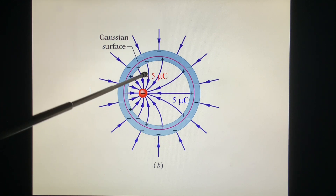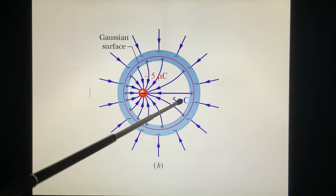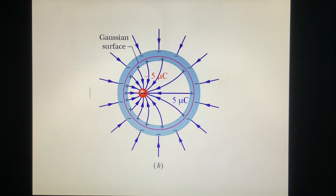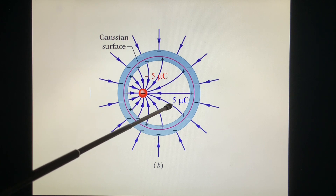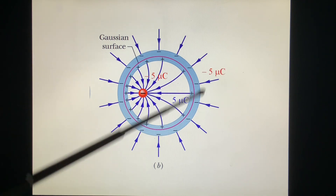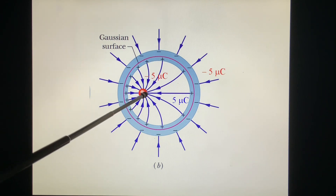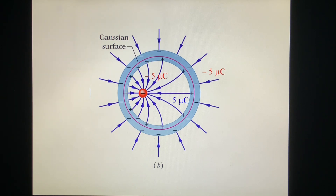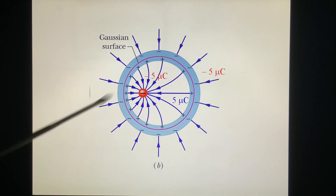Since we have a charge of minus 5 microcoulombs inside, there must be a positive 5 microcoulombs induced on the inner surface to make the net charge zero. The shell itself is originally neutral, so with positive 5 microcoulombs on the inner surface, another minus 5 microcoulombs spreads on the outer surface. The inner surface charge is not uniform, but the outer surface charge is uniformly distributed because the outer charge is screened from what happens inside.